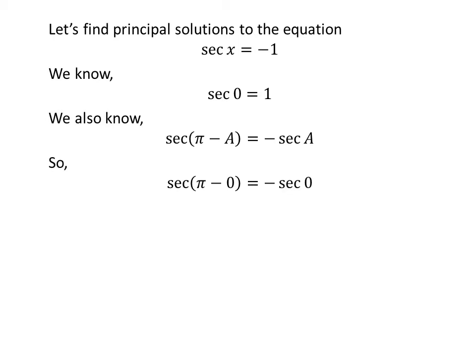Application of the above identity gives us secant of π minus 0 equals minus secant of 0. Plugging the value of secant of 0 gives us secant of π equals minus 1.